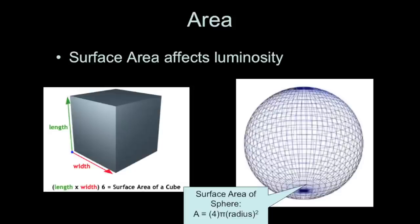By surface area, we mean the actual area on the surface of an object. For example, if you had a cube, you could take the length times the width, multiply by six, and that would be the full surface area of the cube. But things in space are not cubical in general. Often you'll find spherical objects like stars. So the surface area of a star, or a sphere, is four pi times the radius squared.